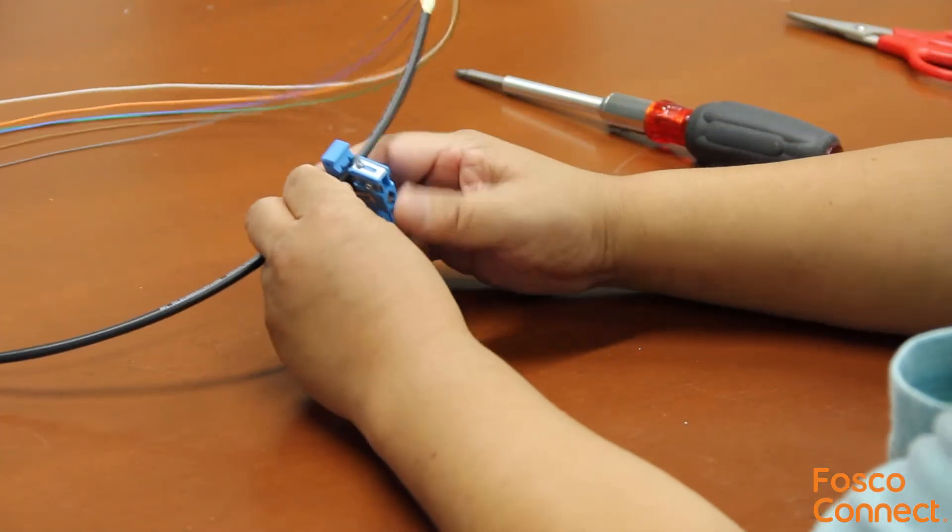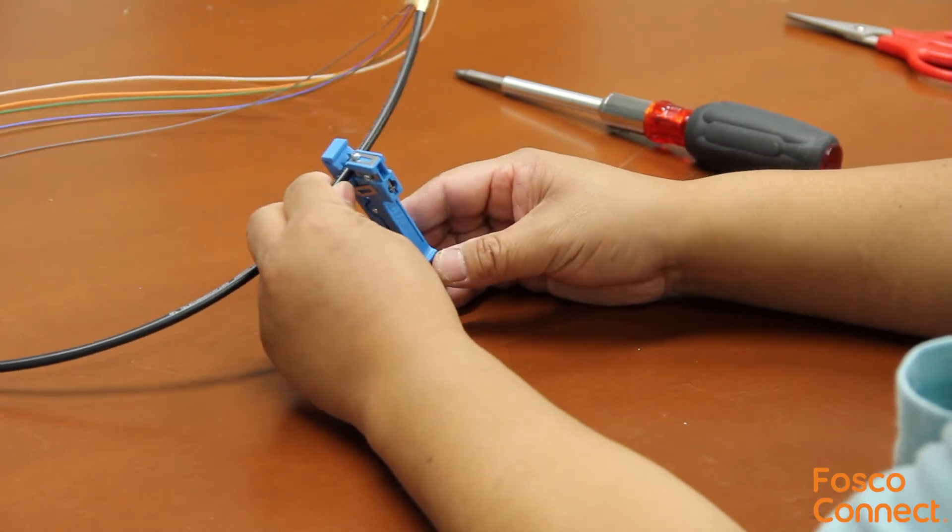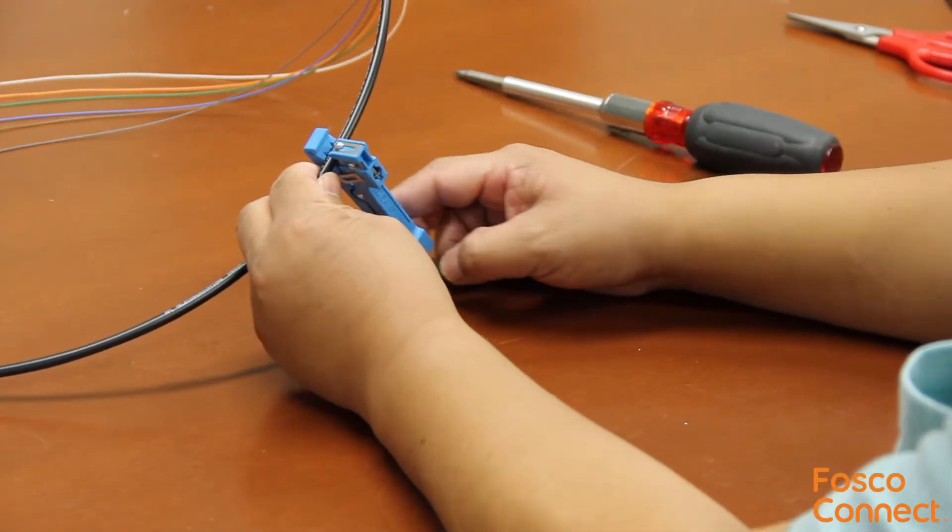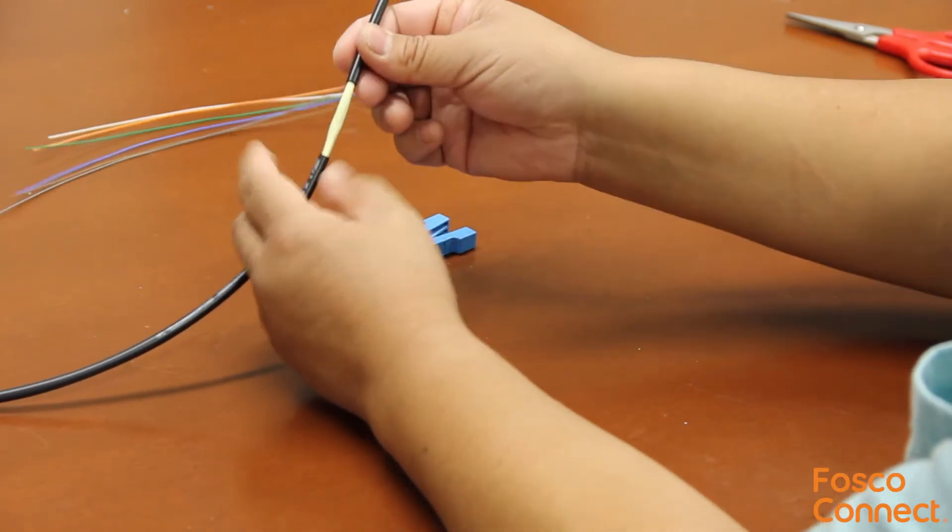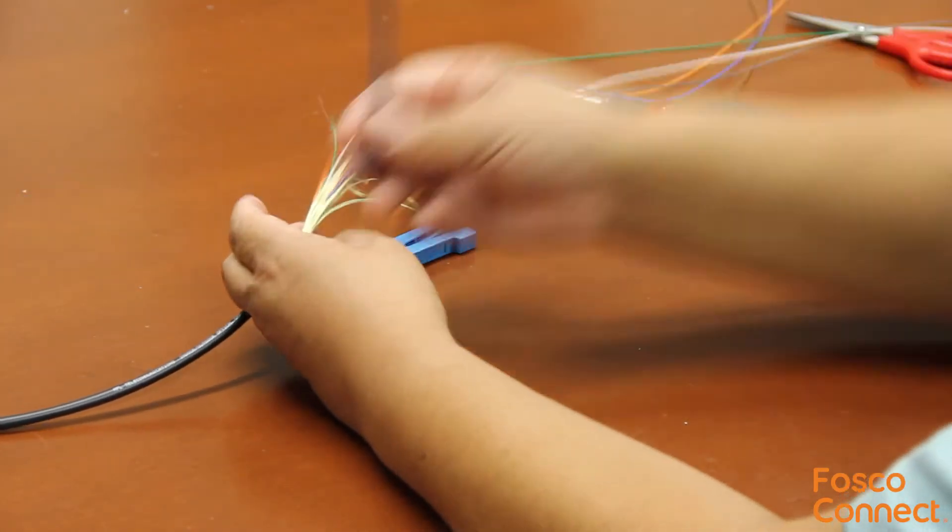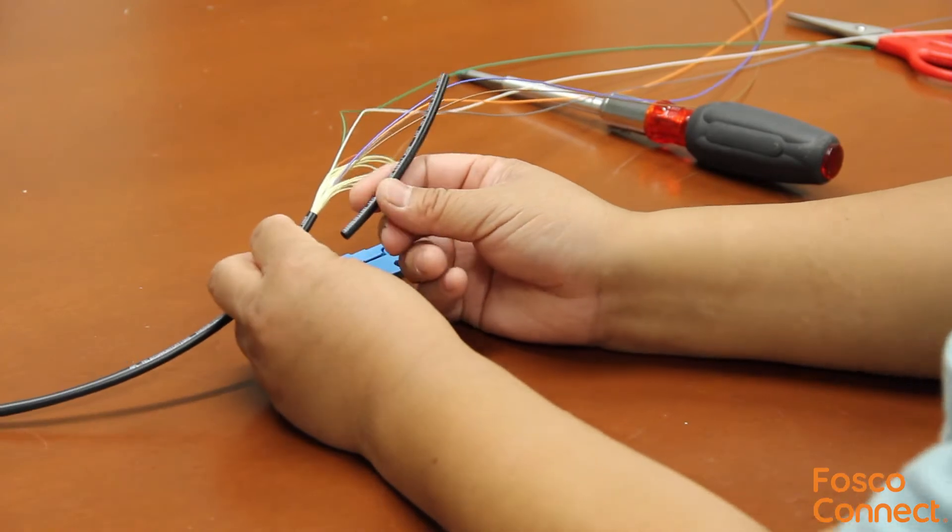Then we can put the stripper where we need to cut the buffer tube. Press the blade so it cuts into the material. Then do the ring cut once. Now the buffer tube is successfully removed and all fibers inside are intact.